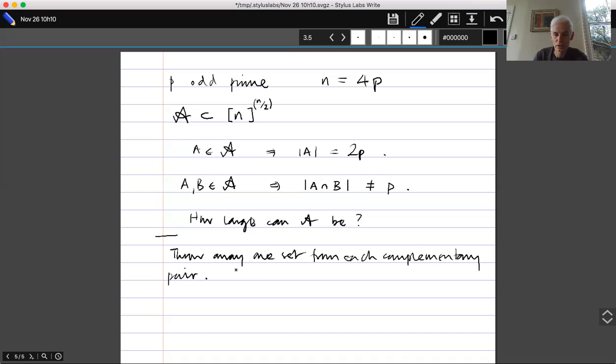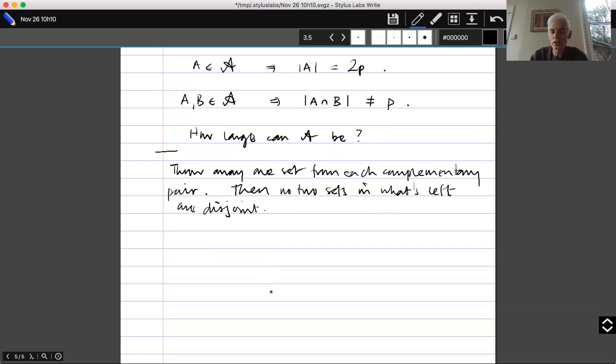So that means that if I throw away one set from each complementary pair, then I get that no two sets in what's left are disjoint. So I can do that. I'll get a set system of size at least half what I had before. So if I get a bound on that, then I can just double that bound and get a bound for the size of A itself.